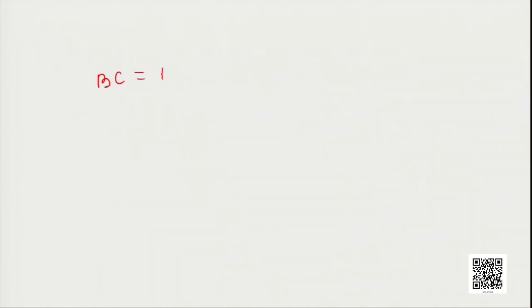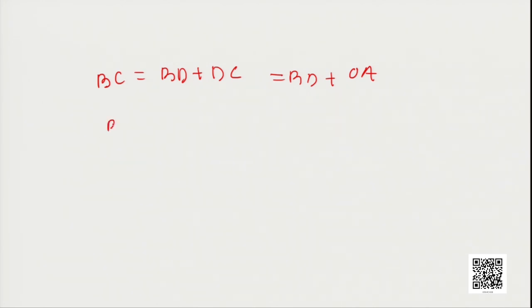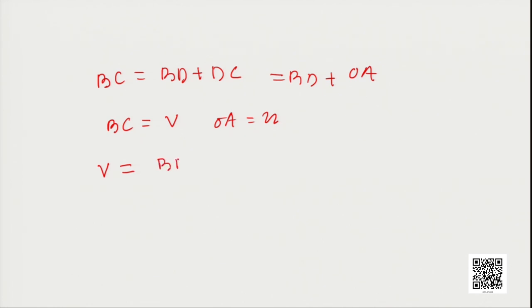To find out the equation for the velocity-time relation: BC is equal to BD plus DC, which is equal to BD plus OA. From the graph, BC is equal to the final velocity V, and OA is equal to the initial velocity U. Substituting these values, V is equal to BD plus U, or we can write BD is equal to V minus U.